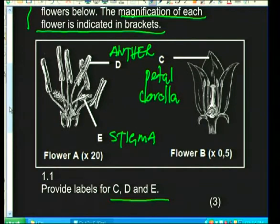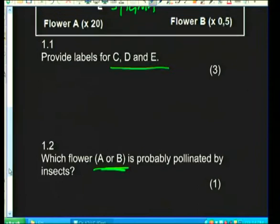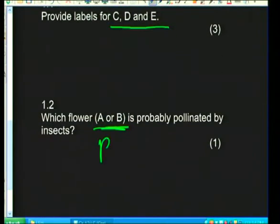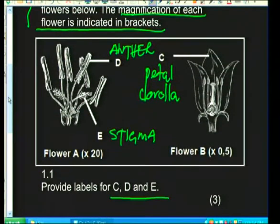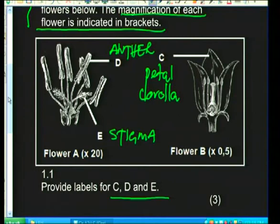In flower A, the anthers are very big and sticking out. In flower B, there is a petal or corolla. So the answer is B, because B has petals. Insects are attracted by brightly coloured petals, and this structure forces the insect inside for nectar, ensuring pollen brushes off onto its legs.